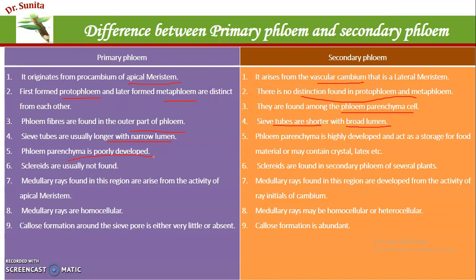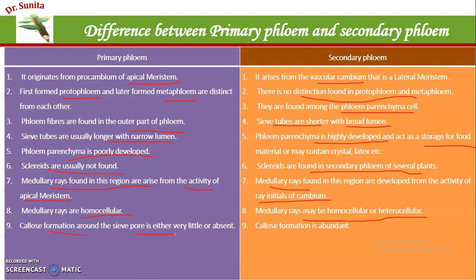Phloem parenchyma is very poorly developed in the primary phloem, whereas in secondary phloem, it is fully developed and acts as storage for food materials. Sclereids are normally absent in primary phloem but are found only in secondary phloem. Medullary rays in primary phloem arise from the activity of the apical meristem and are mainly homocellular, but in secondary phloem, medullary rays are homocellular or heterocellular. During primary phloem formation, callus formation around the sieve pore is mostly absent, but in secondary phloem, callus formation is abundant.